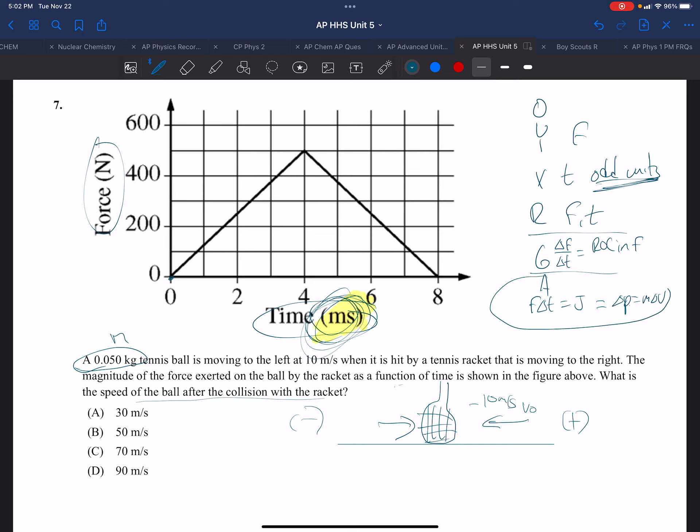So we know the area is going to tell us the change in momentum. So we'll find the area. Now this time in milliseconds, we might as well convert it here so we don't make a mistake. This is 0.008 seconds. So the area of this triangle, we again see we could treat this as two of these triangles, which would give us a rectangle, which has a height of 500 and a width of 0.004.